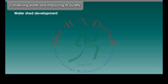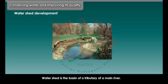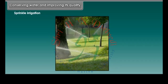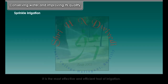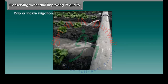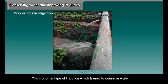Watershed development: a watershed is the basin of a tributary of a main river. Sprinkle irrigation: it is the most effective and efficient tool of irrigation. Drip or trickle irrigation: another type of irrigation used to conserve water — water is supplied to plant roots through underground pipes.